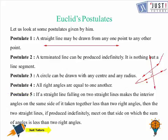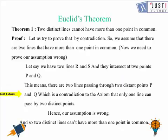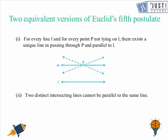Now we come to Euclid's theorem: two distinct lines cannot have more than one point in common. We prove this by contradiction. Assume two lines r and s intersect at two points p and q. This means two lines pass through two distinct points p and q, which contradicts the axiom that only one line can pass through two distinct points. Hence our assumption is wrong, and two distinct lines cannot have more than one point in common.